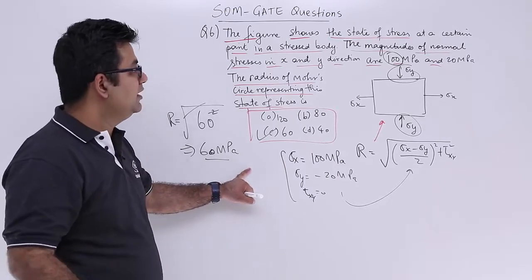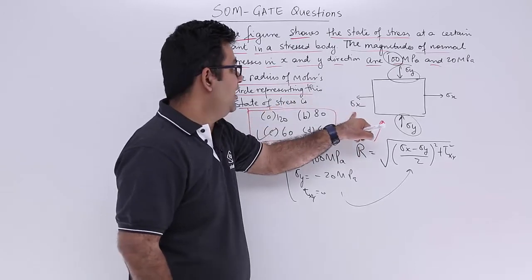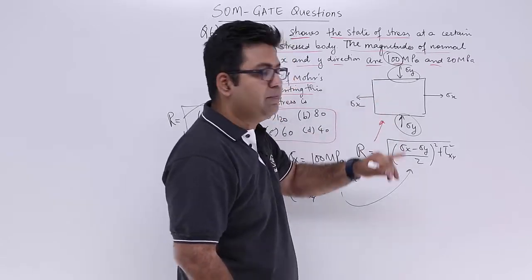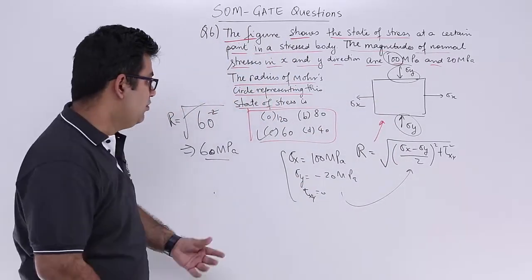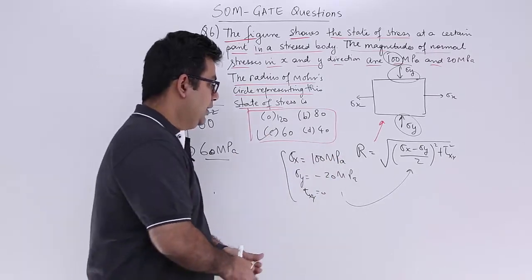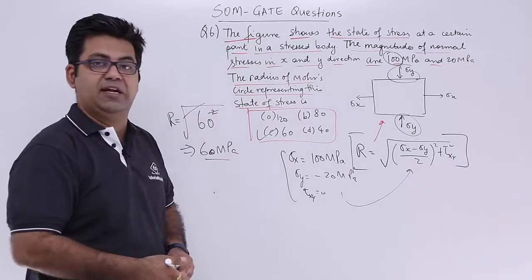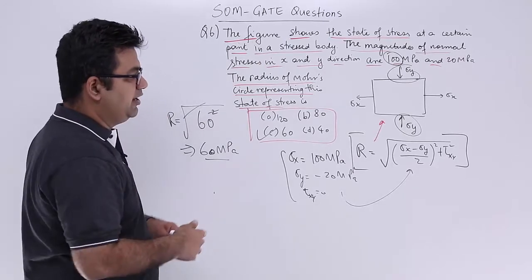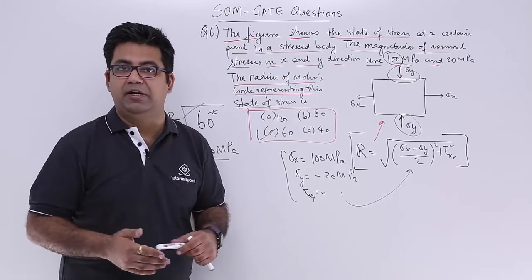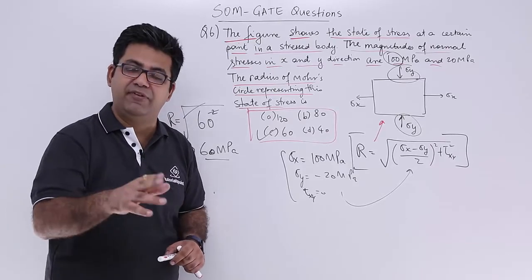A very simple question. Just look at the figure given to you and the data. Sigma x would be positive because it is in the tensile direction, and sigma y would be negative because it is representing a compressive stress. There is no tau, so tau will become 0. The remembrance of the expression of the radius of Mohr's circle is a requirement in this. A pretty straightforward formula-based question which appeared sometime in GATE exam. I hope you understood this question number 6. Now let's move on to question number 7 in the next video.